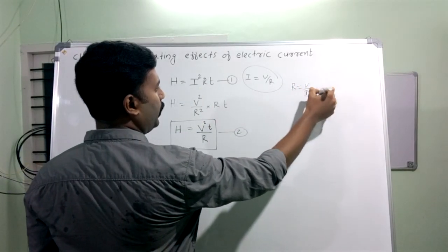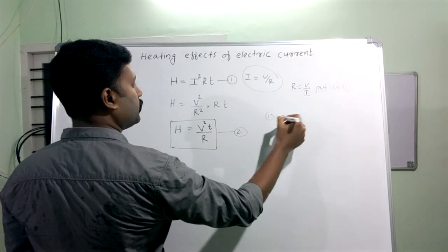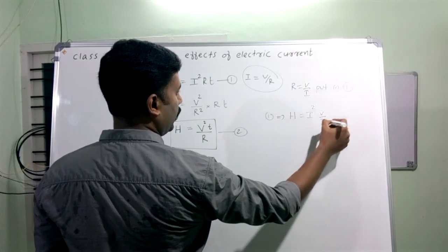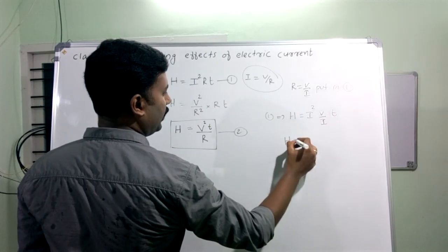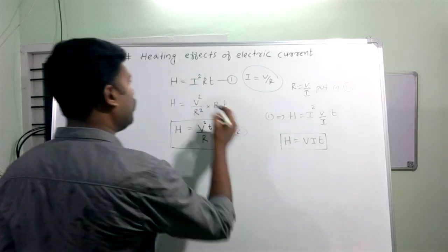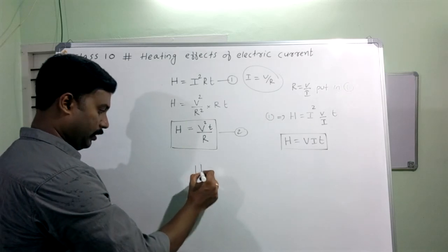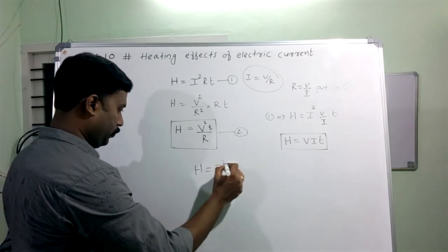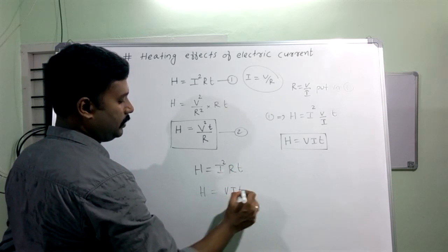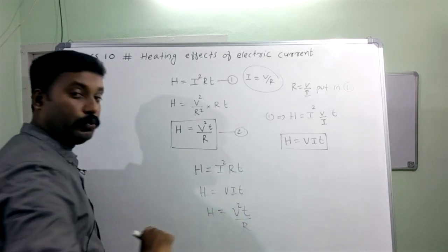Substituting Ohm's law — V is equal to IR, so R is equal to V by I — into equation number 1: H equals I² R T becomes H equals I² into (V by I) into T. Cancelling I, we get H equals V I T. Also, H equals V² T divided by R.